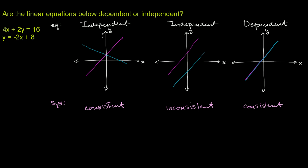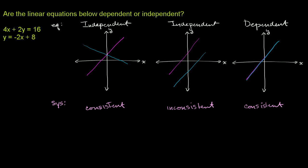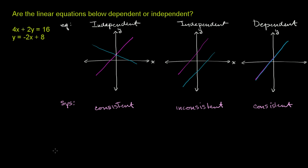In this example, they're asking us whether the equations are dependent or independent. If they can be represented by two separate lines, they're independent. If they're the exact same line, they are dependent. So let's figure it out.